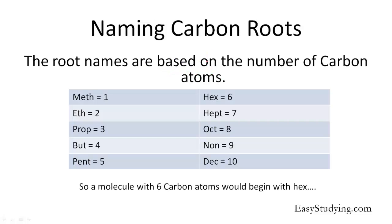Starting with the carbon atom, the root names which we use to name the carbon atom are based on the number of carbon atoms. I've put a chart below of how we name the carbon atoms: meth is one, eth is two, prop is three, but is four, pent is five, hex is six, hept is seven, oct is eight, non is nine, and dec is ten. So a molecule with six carbon atoms, such as C6Hx, would begin with the term hex.